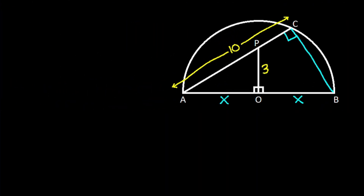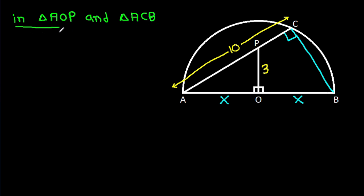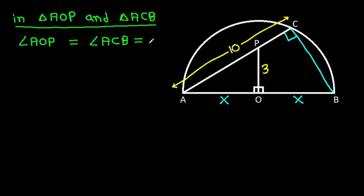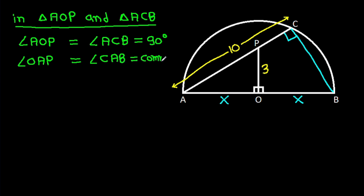Now, in triangle AOP and triangle ACB, we have angle AOP equal to angle ACB, that is 90 degrees, and angle OAP is equal to angle CAB, which is common. So triangle AOP is similar to triangle ACB.